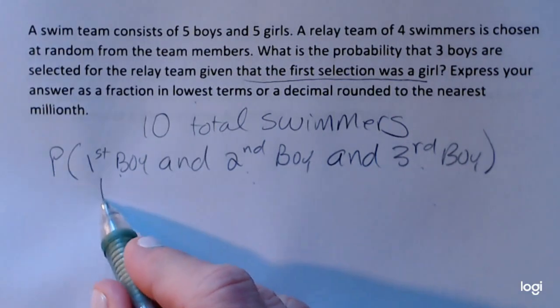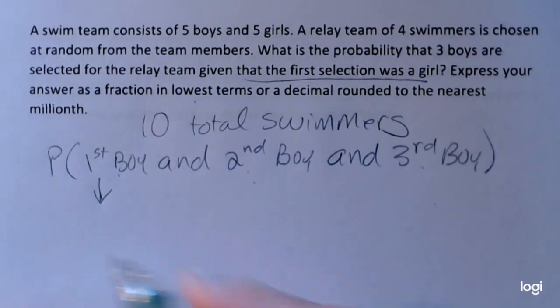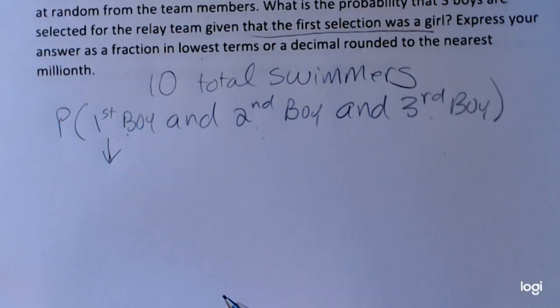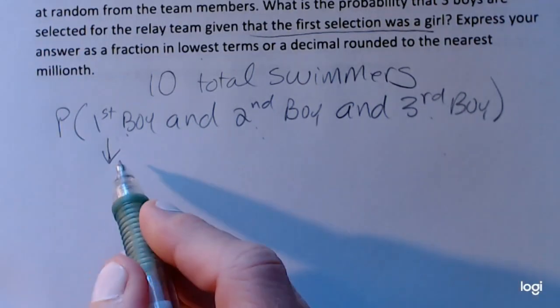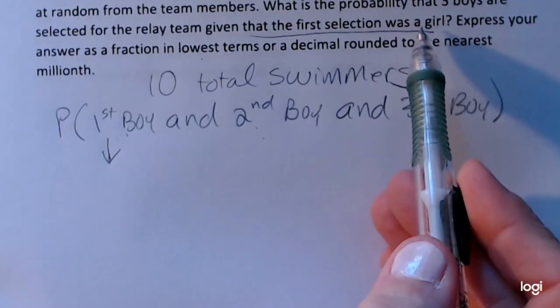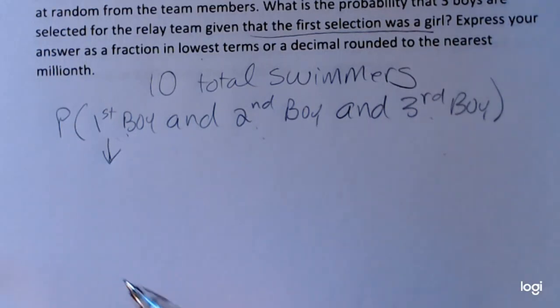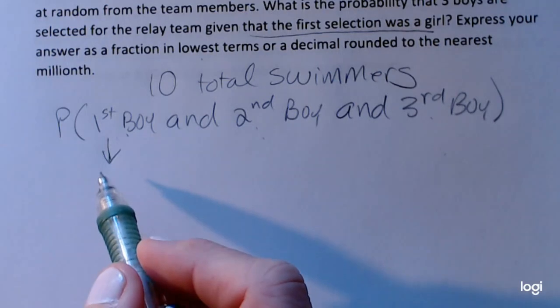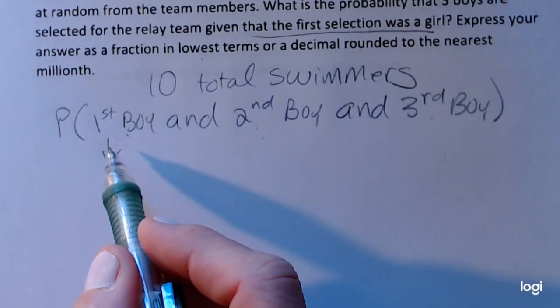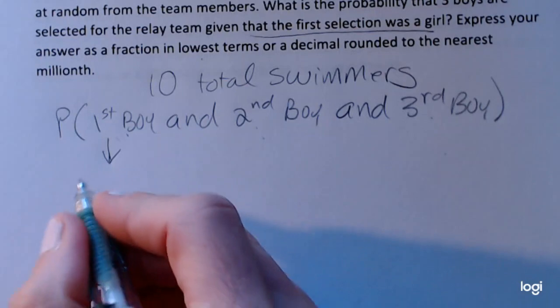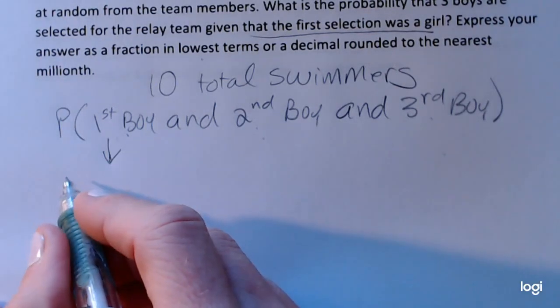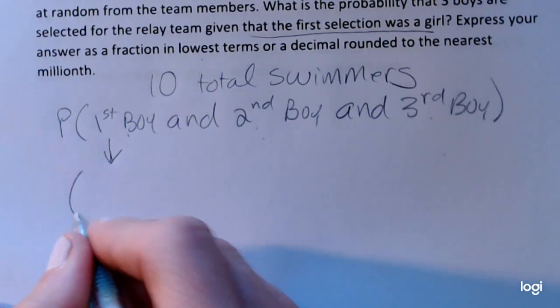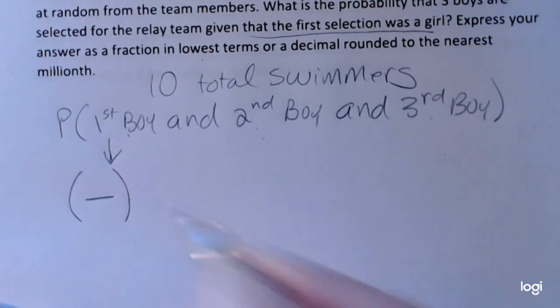So when I write the factor for this first probability, I need to keep that in mind that a girl has already been selected. So this first factor is going to be the probability that we get a boy given that we've already gotten a girl. So the probability we get a boy given that the first selection was a girl is going to be...